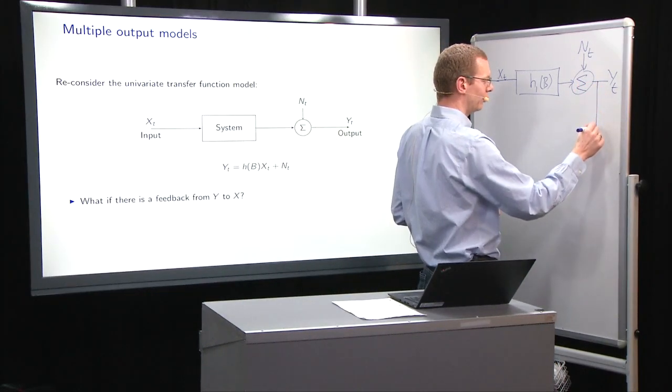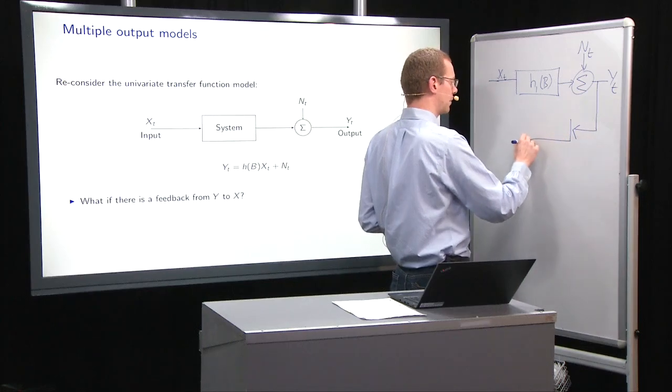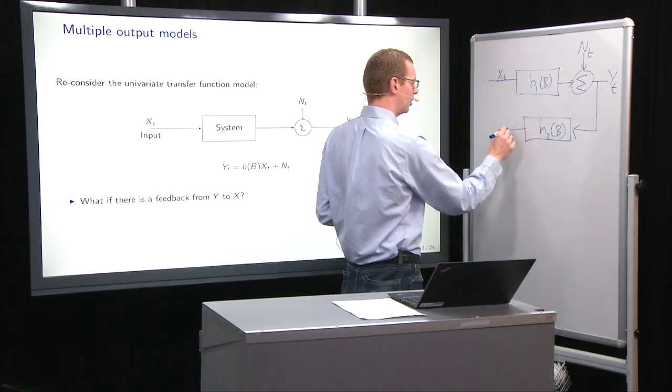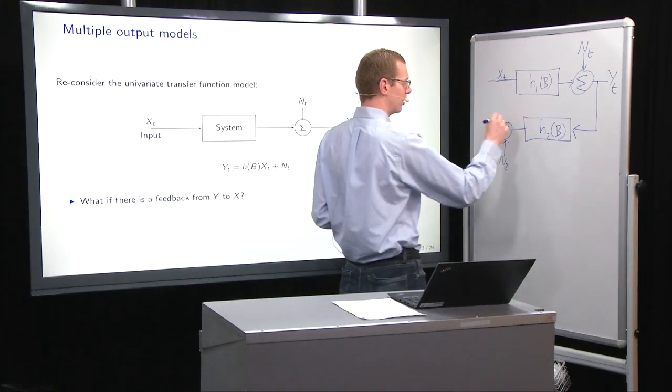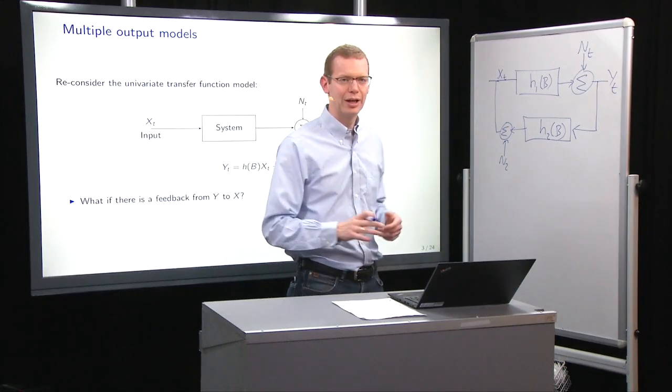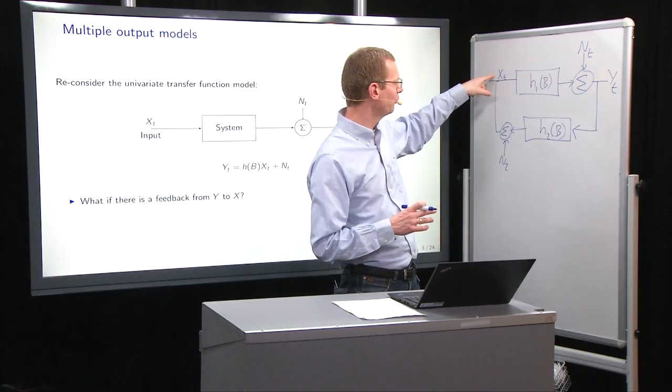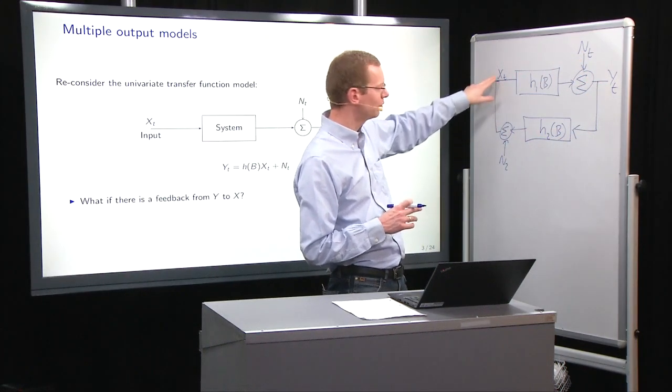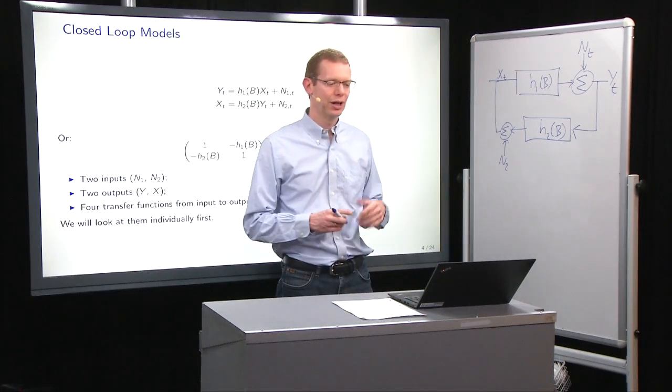That means we take the output YT and add that into a system, let's call this one H2 of B. Then you can add some more noise, let's call it N2. And then we take this and we define that as XT. Now with this formulation we have a feedback loop. The input from X goes through H1 to get to Y by adding NT, but it also feeds back to X. This is basically what we have as a closed loop model.